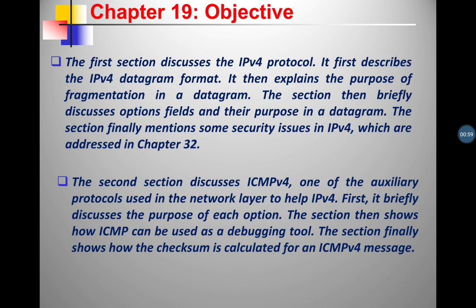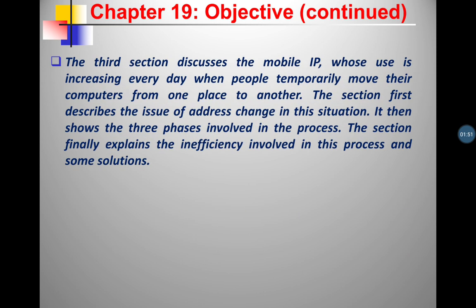In the first section on IPv4, we will study the IPv4 datagram format, the purpose of fragmentation, the option fields and their purpose in a datagram, and security issues. The second section discusses ICMPv4, an auxiliary protocol at the network layer that helps IPv4. We will briefly cover its purposes, how it can be used as a debugging tool, and some calculations, then move on to Mobile IP.